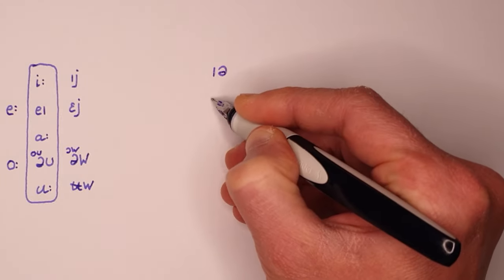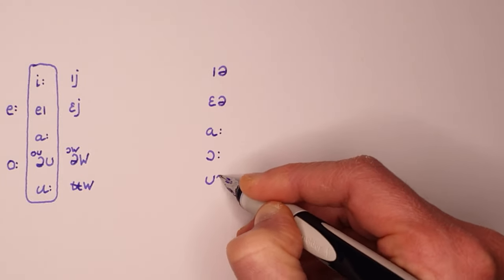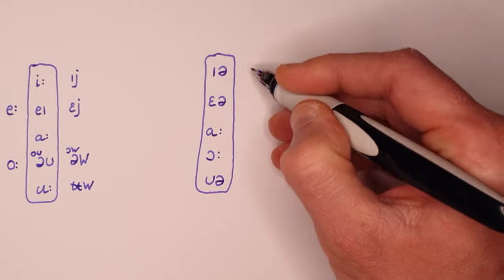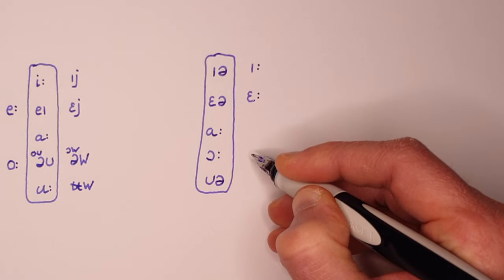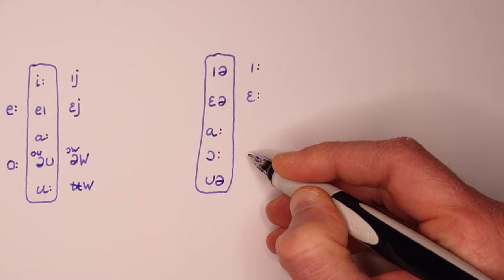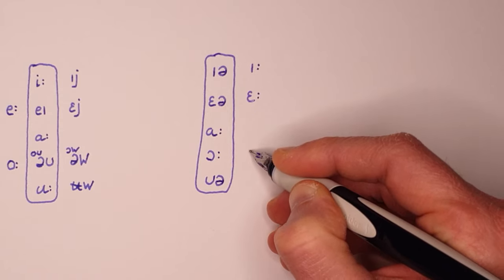Diphthongs ending in schwa have become long vowels in the south: near, square. Start already has a long vowel in SSB, as does force.